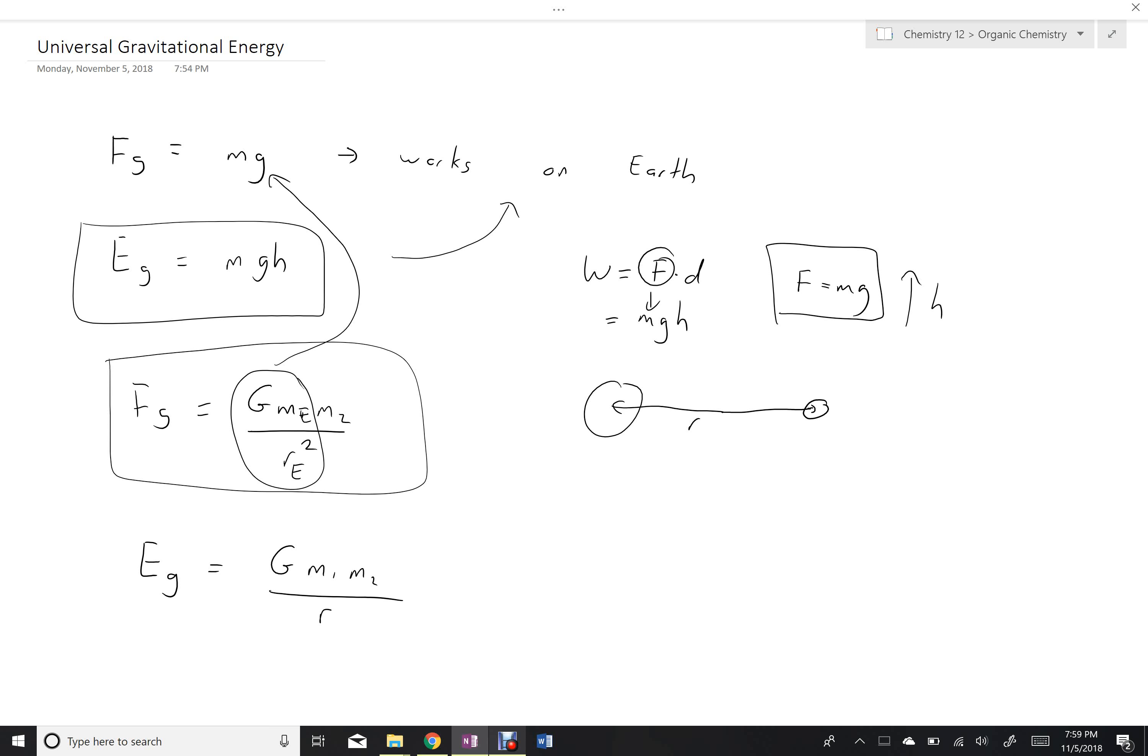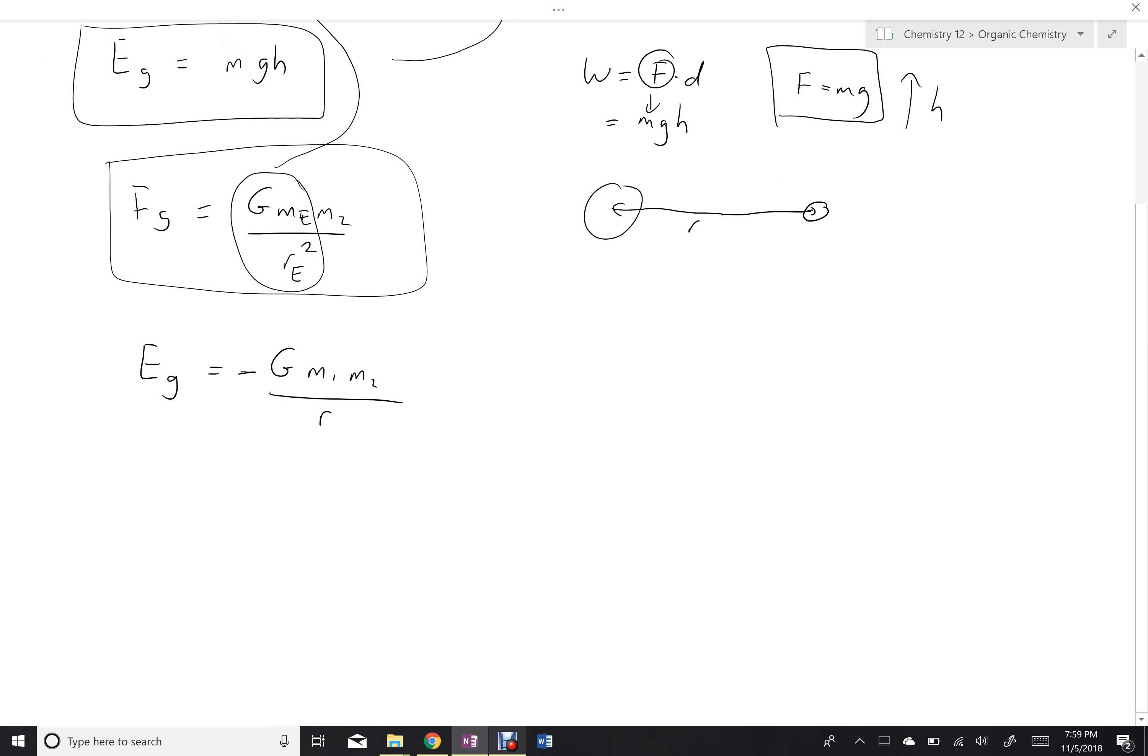It is still the same R that represents the distance between the center of the two objects, and this formula has a negative in it. This negative is reflective of the fact that we have an attractive force, and so the idea is that the energy associated with gravitation is a negative energy.